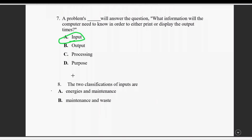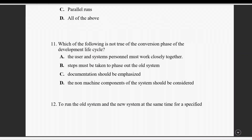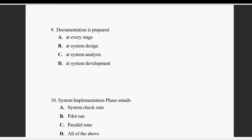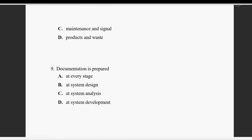Question number eight: two classifications of inputs are. Options include energy and maintenance, maintenance and waste. The correct answer is maintenance and signal — definitely maintenance and signal.